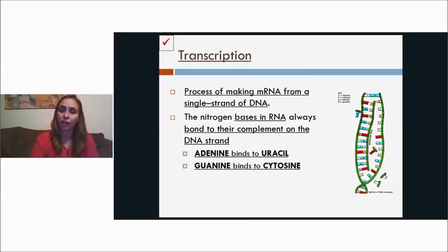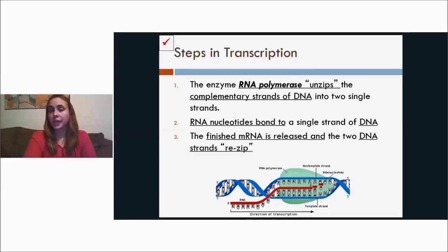So the first step in transcription is the enzyme RNA polymerase unzips the complementary strand of DNA into two single strands, and then finds RNA nucleotides to bond to the single strand of DNA. And as they're bonding and coming together, the molecule rezips, the DNA molecule rezips behind it, as the enzyme RNA polymerase kind of rides down the DNA strand, it'll continue unzipping at the front, and it'll rezip at the back and recoil, and the mRNA strand, or the messenger RNA strand, will fall off.